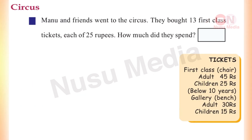We will do a circus activity on the next page. We will do a lot of questions in the circus, one by one. Manu and friends went to the circus. They bought 13 first class tickets, each at 25 rupees. How much did they spend? They bought a first class ticket for 25 rupees.